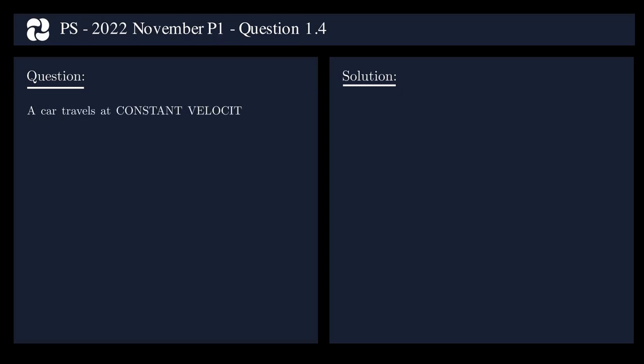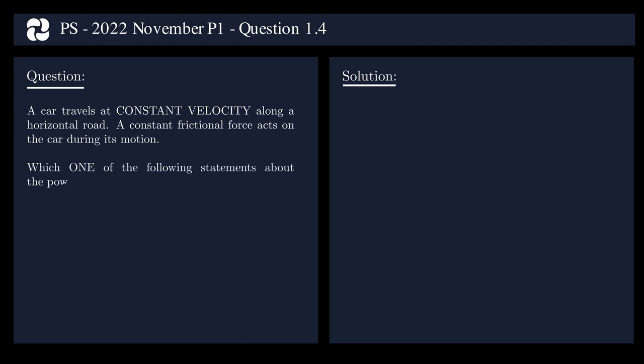A car travels at constant velocity along a horizontal road. A constant frictional force acts on the car during its motion. Which one of the following statements about the power dissipated by the engine of the car during the motion is correct? The power: A is zero, B increases, C decreases, D remains constant.